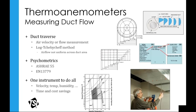You can also do duct traversing with a thermoanemometer. One benefit over a pitot probe is that the thermoanemometer not only calculates flow in the duct, but can also measure temperature and humidity if those sensors are installed — taking care of some psychrometric measurements. You get air velocity, airflow, humidity, wet bulb, dew point, and temperature measurements simultaneously. You store that data, download it, and incorporate it into your reports.